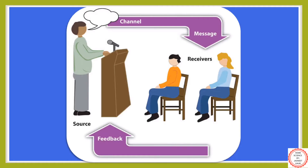The receiver will take the message and will give feedback to the source. Another example of this same process is this video which you are watching right now, where I, as the source or sender, am delivering my lecture through a channel which is YouTube. You who are watching this video are considered as receivers. Your liking and disliking about this video will be considered as your feedback towards the source — that means me.